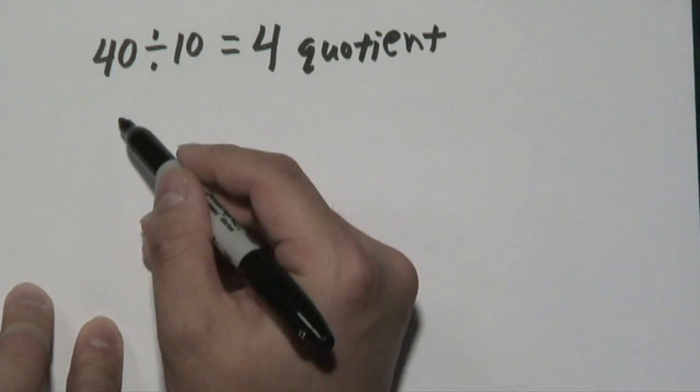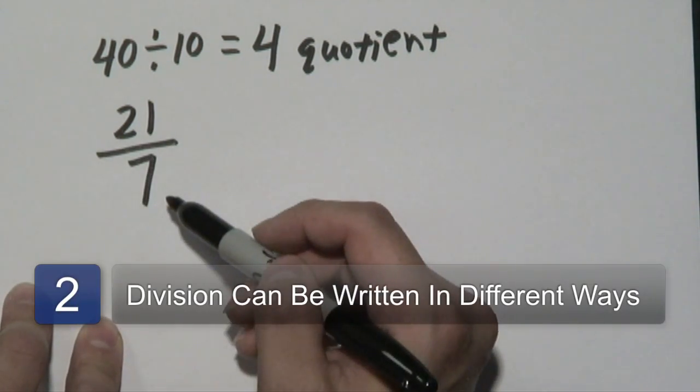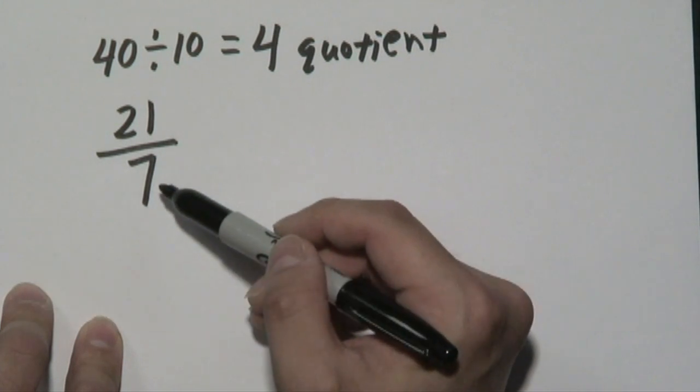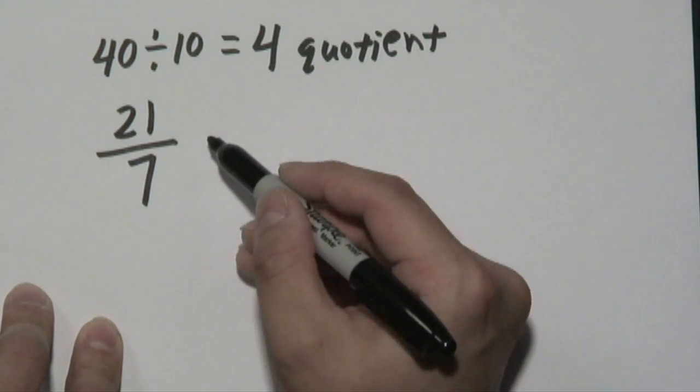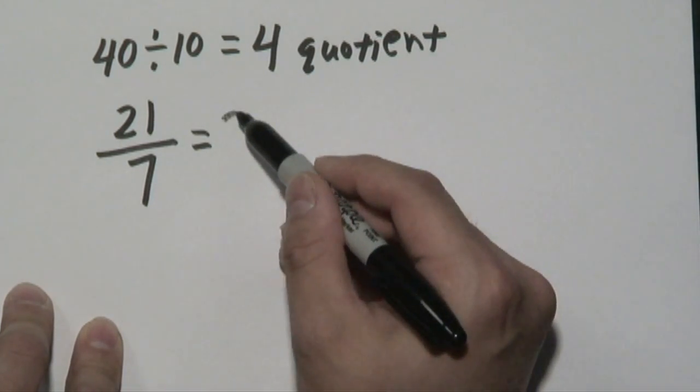Now another example is if you have division written this way, 21 divided by 7 in fraction form. Now again, the numerator is your dividend, the denominator is your divisor, but again you're concerned about the answer because that's going to be your quotient. 21 divided by 7 is going to be 3.